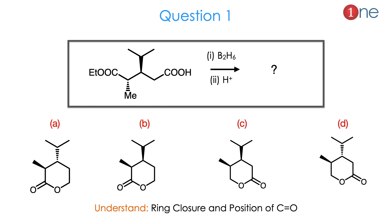Let us see question number 1. The starting material is a long-chain alkane with one carboxylic acid on one side and an ester on the other side, with one methyl group above and one isopropyl group below the plane. The reagents are B2H6 and H⁺. They ask you to find the product, which is mostly a cyclized one. The question is how the cyclization occurs — where the methyl is above or below the plane, and how the isopropyl relates to the methyl.